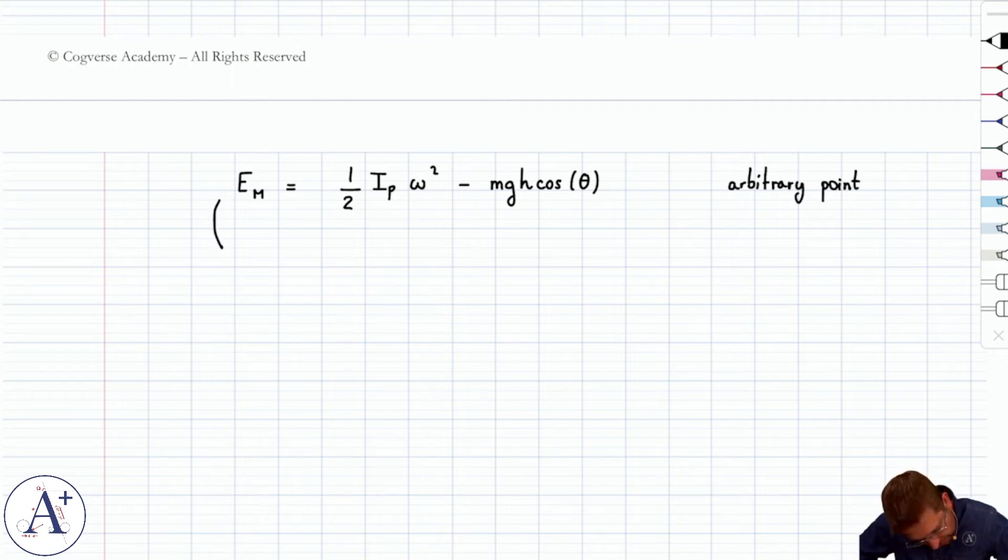So, if you take the derivative with respect to time, dm dt, you know that you're going to get zero here.